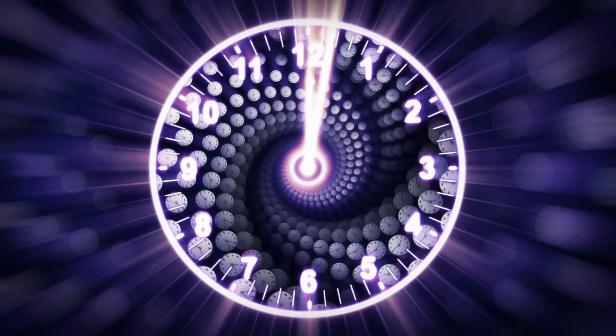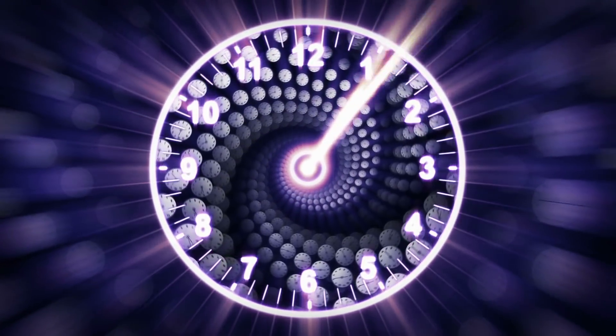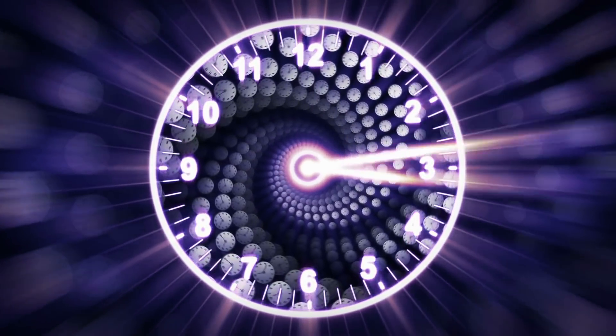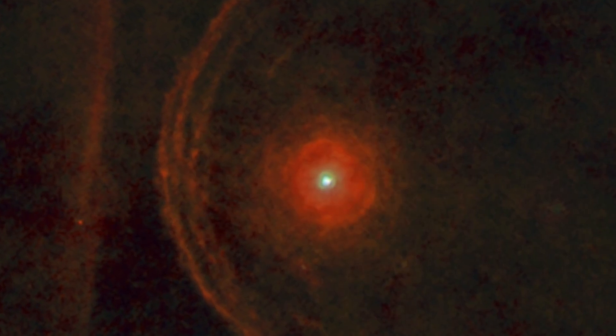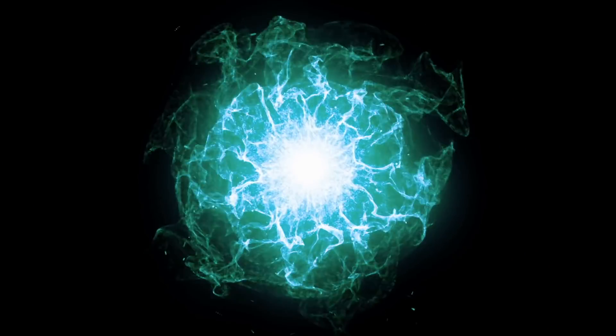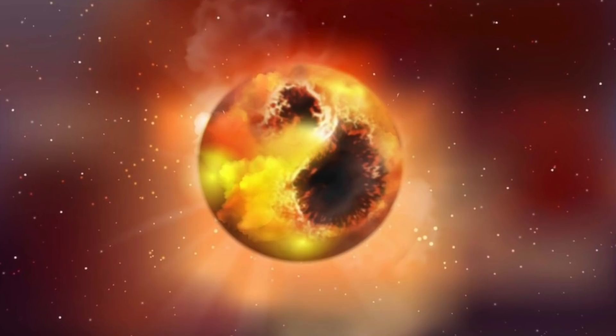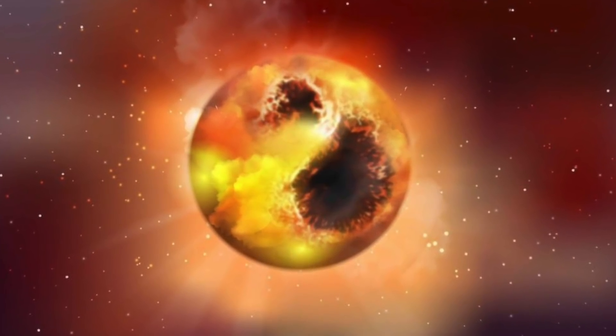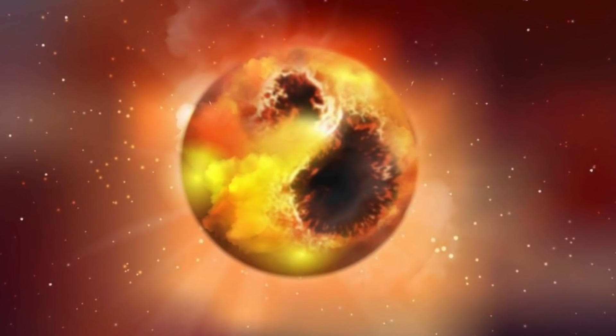We Earthlings must be aware that we will not learn of Betelgeuse's death until about 700 years after the actual event. This is how long it takes for light to reach us. Theoretically, the giant may already have exploded. In fact, the temporary darkness of the star turned out to be a relatively normal phenomenon of wandering star spots. Also, possibly a large-scale repulsion of dust has taken place.